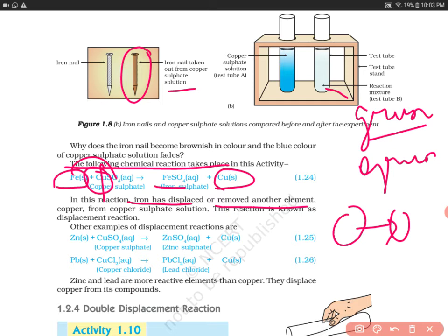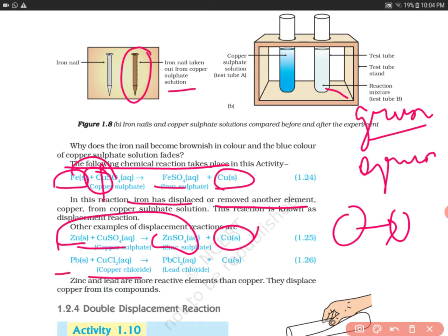Iron is more reactive than copper, so it displaces copper from copper sulfate solution. We also have more examples: zinc reacts with copper sulfate to form zinc sulfate and elemental copper; lead similarly displaces copper. This means zinc and lead are both more reactive than copper, so they can displace copper from its compounds.